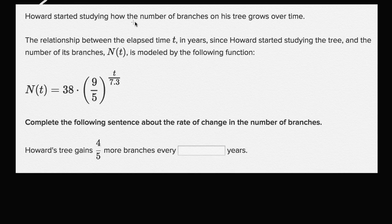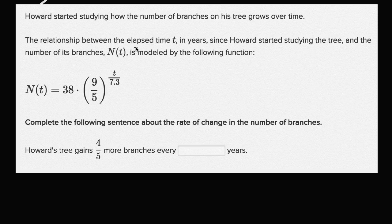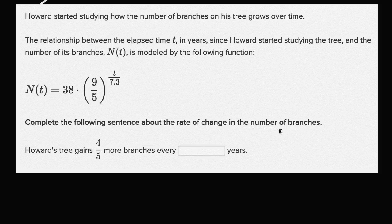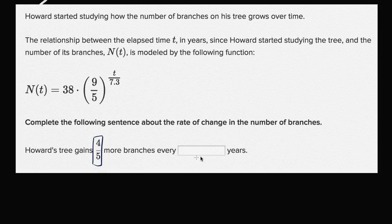Howard started studying how the number of branches on his tree grows over time. The relationship between the elapsed time t in years since Howard started studying the tree and the number of its branches n of t is modeled by the following function. Complete the following sentence about the rate of change in the number of branches. Howard's tree gains 4 fifths more branches every blank years.